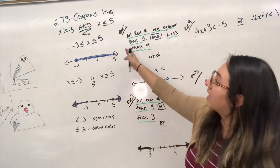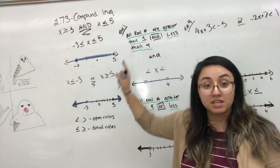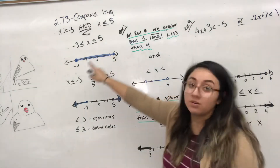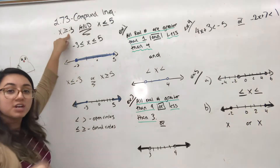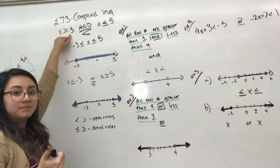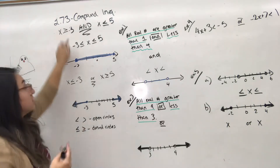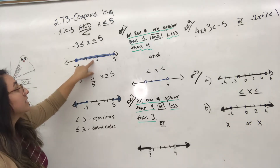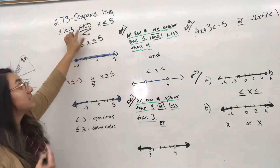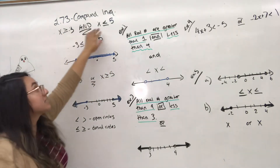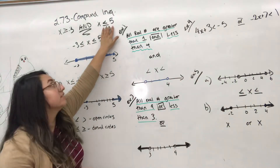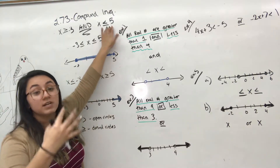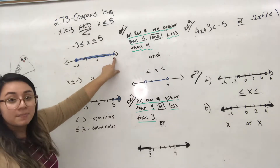We have compound inequalities. There are two types — I call them the ANDs and the ORs. The ANDs are combined; it's between a range when graphing. Here, x is greater than or equal to negative three, so numbers greater than or equal to negative three are negative three, negative two, negative one, zero. At the same time, x is greater than three and less than or equal to five — so five, four, three, two, one, and so on.